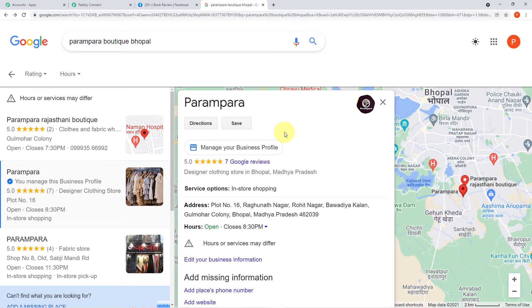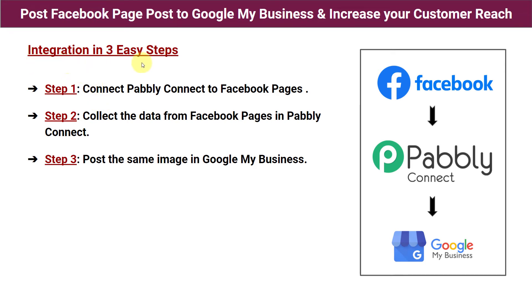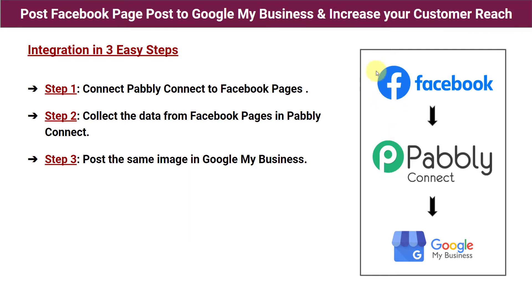Let me show you the process of integration on my screen. Before we start, let me tell you three easy steps of integration. Step one: connect Pabbly Connect to Facebook Pages — we'll log in to Pabbly Connect and integrate Facebook Pages. Step two: collect the data from Facebook Pages in Pabbly Connect — the details of a posted image get transferred into Pabbly Connect. Step three: post the same image in Google My Business — we integrate Google My Business with Pabbly Connect and map the image so it's automatically shared there as well.